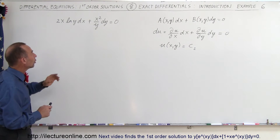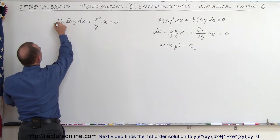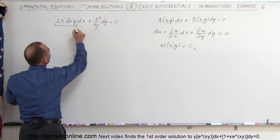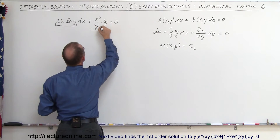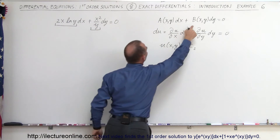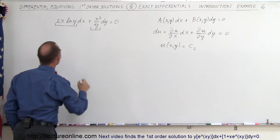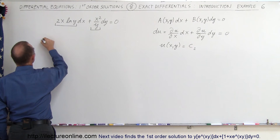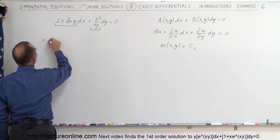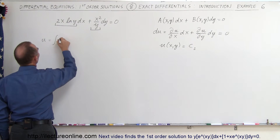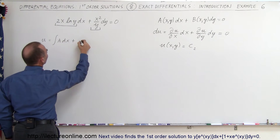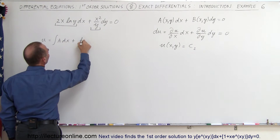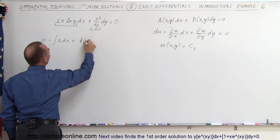This portion of the equation relates to A in the equation, and this right here relates to B. Which means that u, the general solution, can be found by taking the integral of A times dx plus a constant of integration, which would be some function of y.